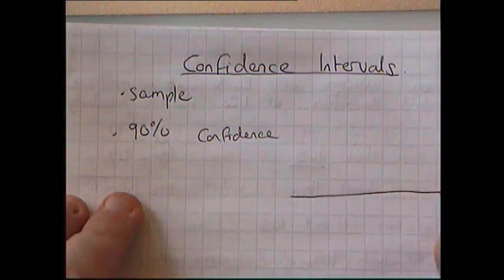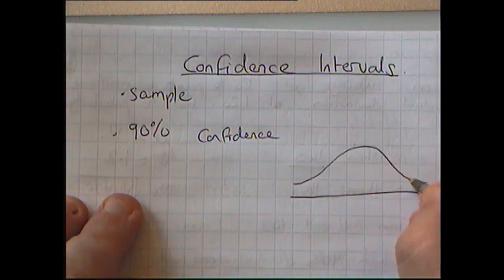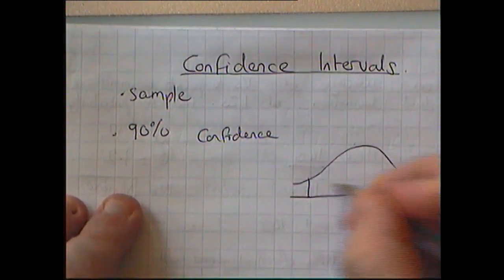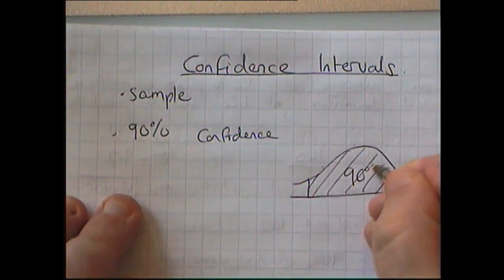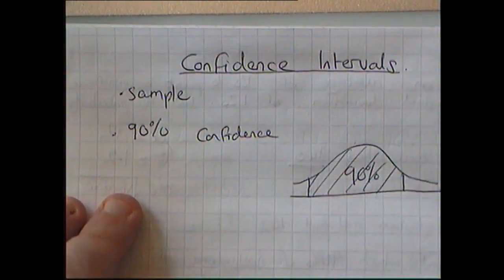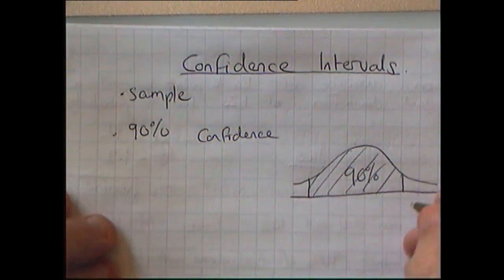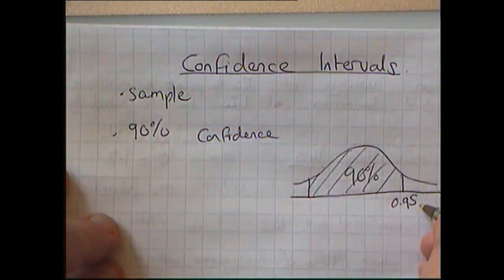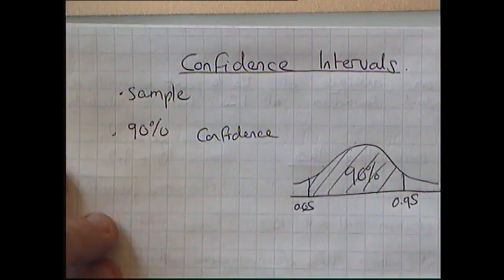On my diagram, the normal distribution looks like the standard bell curve. I'm saying that between these two values I've got 90% of my data, so I'm 90% confident the mean will be between them. That does mean that this value here would be the 0.95 value, and 0.05 at the other end.